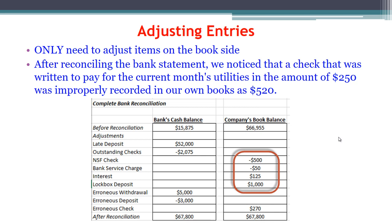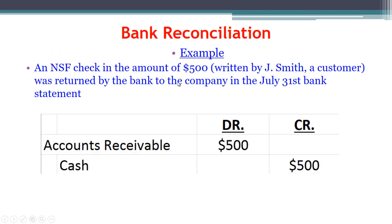Now that we've done the reconciliation, adjustments on the bank side will likely clear up on their own by next month. However, anything we had to reconcile on our side requires us to make adjusting journal entries — we're the only ones who make those entries. The bank will take care of their own side. We have to adjust our cash account so it's accurate. That means any adjustment on the book side — including the $270 error — needs a journal entry.